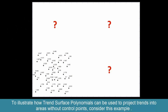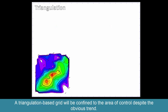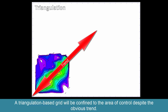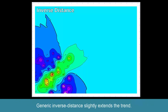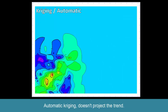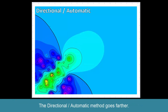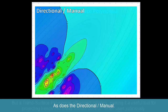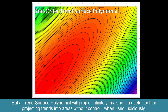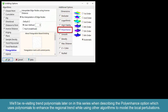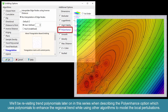To illustrate how trend surface polynomials can project trends into areas without control points, consider this example. A triangulation-based grid will be confined to the area of control despite the obvious trend. Generic inverse distance slightly extends the trend. Automatic kriging doesn't project the trend, whereas manual kriging does a much better job but terminates the projection within a short distance. The directional automatic and manual methods go farther. But a trend surface polynomial will project infinitely, making it a useful tool for projecting trends into areas without control when used judiciously. We'll revisit trend polynomials later when describing the polyenhance option.